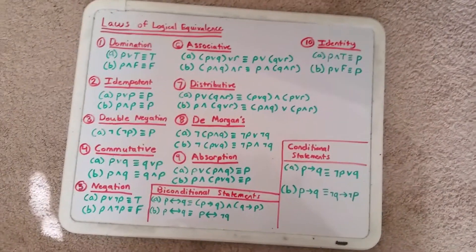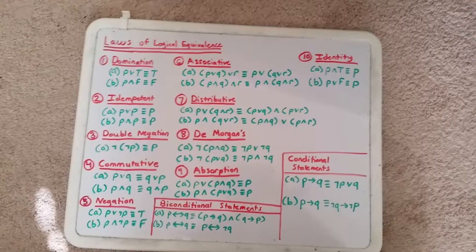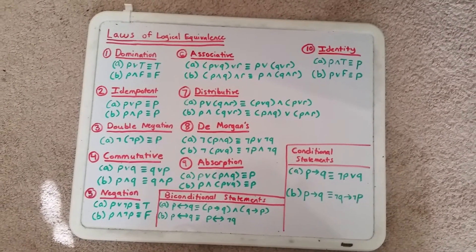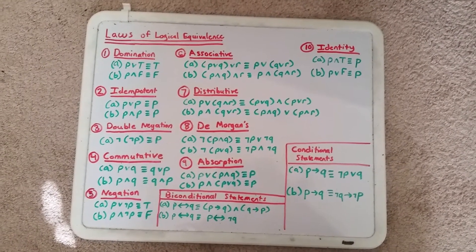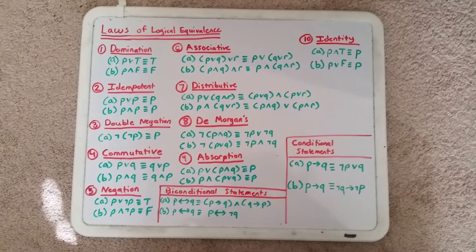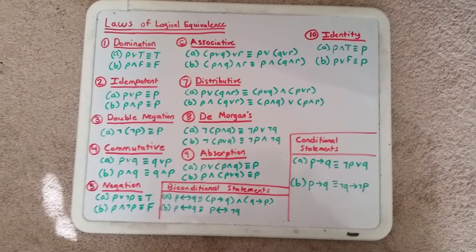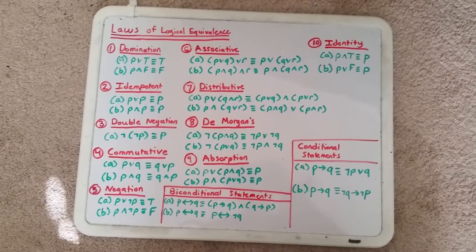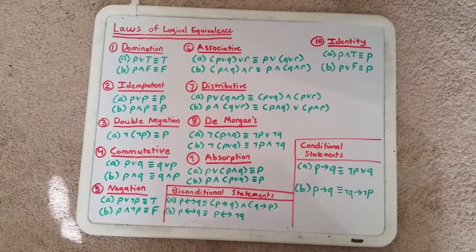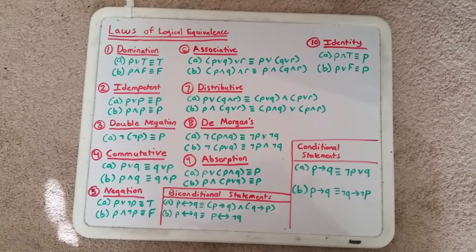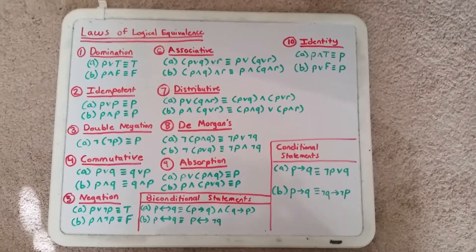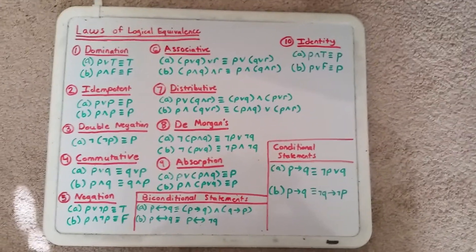With these 10 laws and these two statements, we are able to do tautology proofs and logical equivalence proofs. Thank you, and I'll see you in the next video.